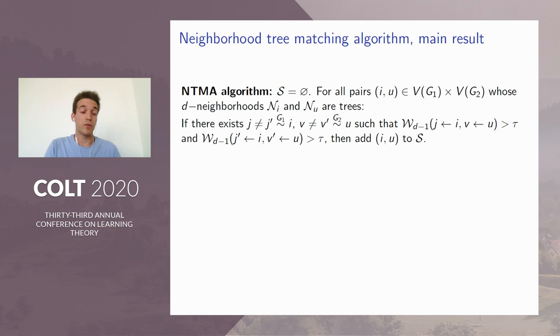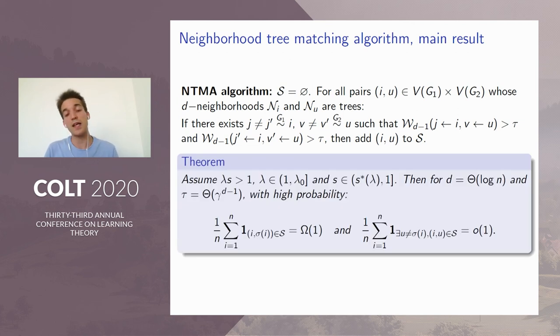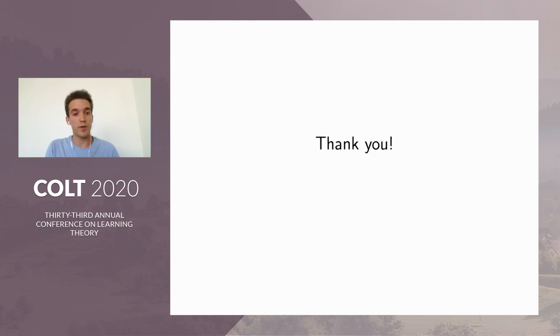This way, the performance of our algorithm will be far better than the previous one. The main result is as follows: Assume that lambda times s is strictly greater than one. This corresponds to survival of the intersection graph, which carries the correlation. Then we found a regime of lambda and s such that for d of order log n and for tau of order gamma to the power d minus one, where gamma is defined in the previous result, then with high probability, we can actually partially recover sigma. The overlap is positive and the fraction of incorrectly matched nodes is vanishing. Feel free to come and ask questions to have further information. I thank you for your attention.